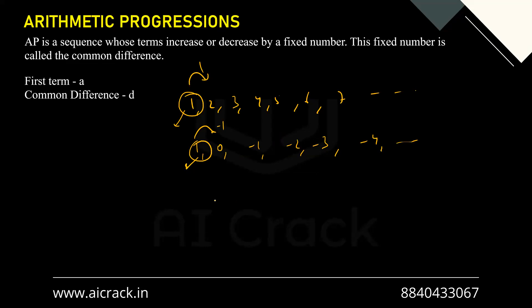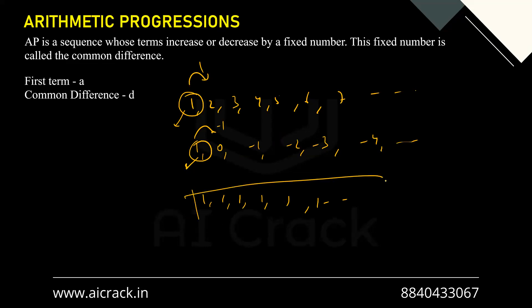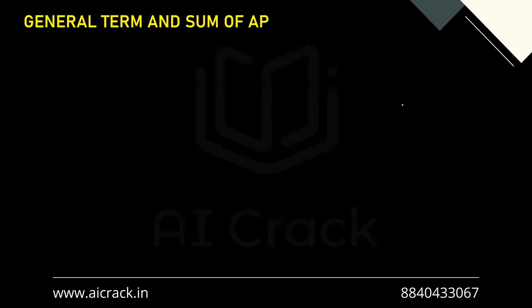One can also have common difference equal to zero, so the sequence is 1, 1, 1, 1, 1... Although it doesn't have much practical utility, by definition it is still an AP. So here d = 0, previously d = -1, and before that d = 1. Now let's talk about the general term and sum of an AP.